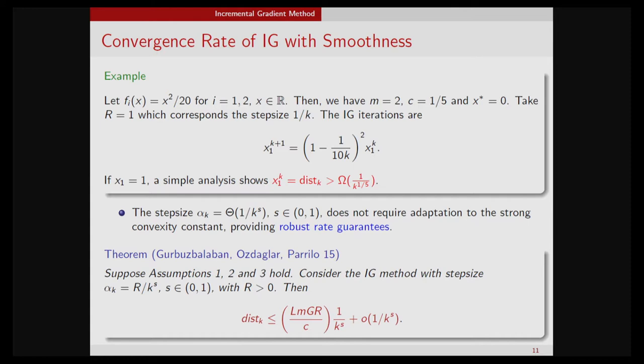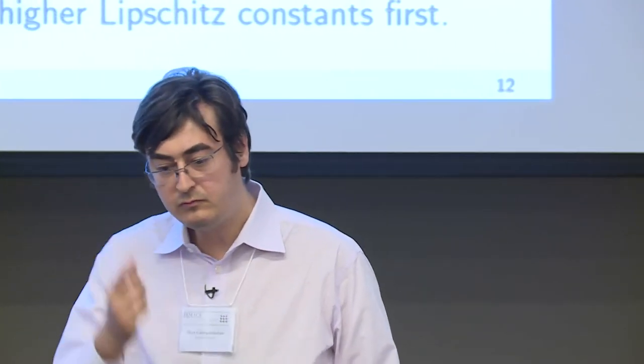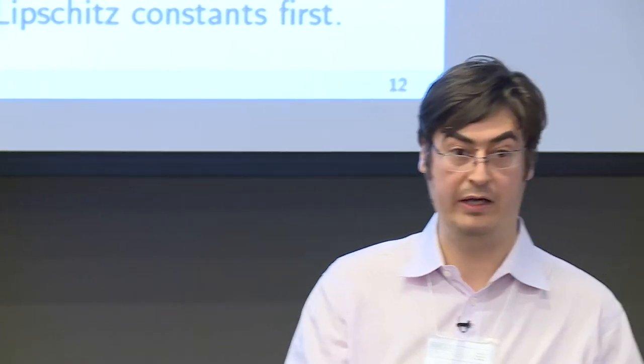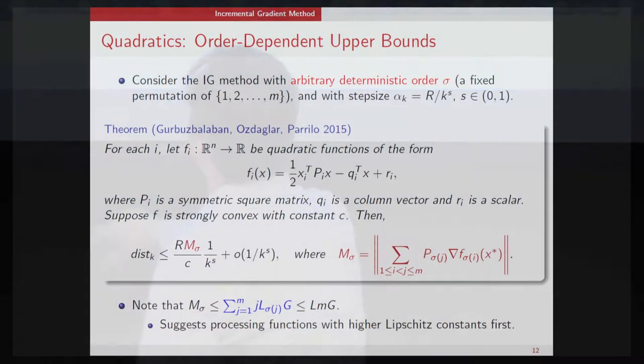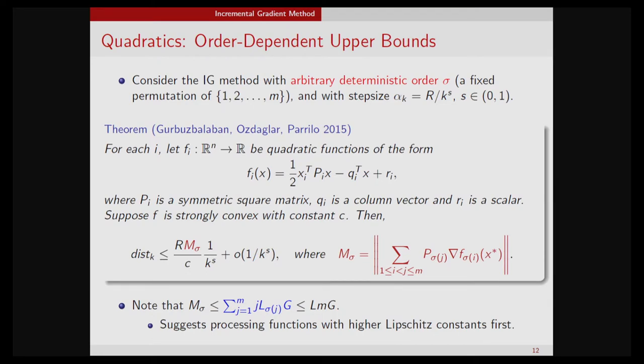These results tell you how many iterations you need to reach an epsilon-approximate solution. How bad incremental gradient is depends on the order you follow. If all your functions look very similar, incremental gradient looks like gradient descent, and you won't have large constants. Previously, the literature had no performance guarantees that depend on the order. Some orders are really nice, some are bad — in the worst case, the constant scales linearly with M, the number of functions, but in the nicest case it stays roughly constant.